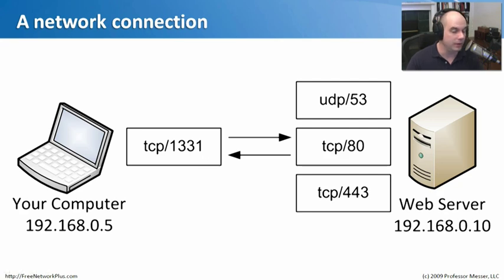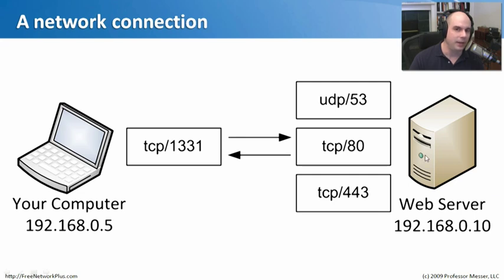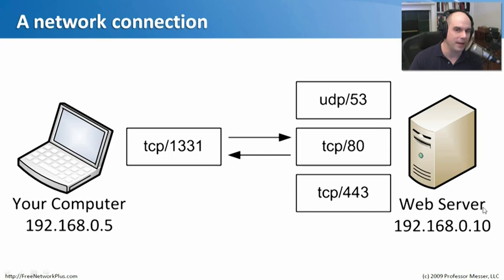TCP port 1331 is an ephemeral port — one that is temporary and used just for this communication. My machine goes out to that IP address on TCP port 80 and communicates back and forth. When the web server receives that packet, it uses my IP address and TCP port 1331 to communicate back. For the duration of this communication, those two port numbers and two IP addresses complete the circuit. Once the session is over, my machine might choose a completely different ephemeral port number.